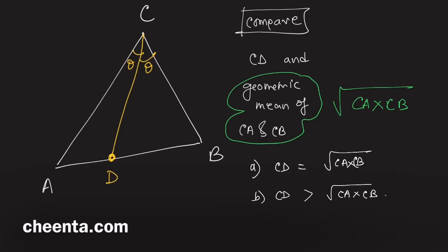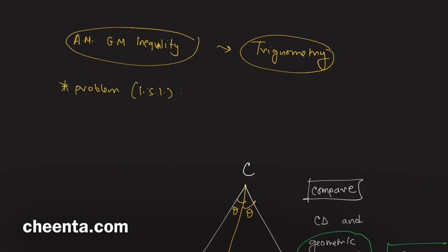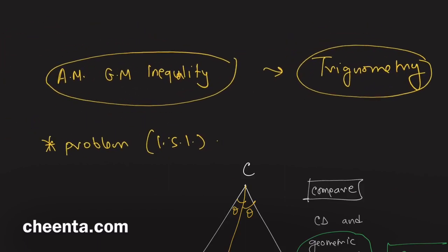Is CD always greater than or equal to √(CA·CB), or is CD less than or equal to this? Or maybe we can't say anything for certain. The two concepts you will need to understand this problem are the AM-GM inequality and the area formula from trigonometry.